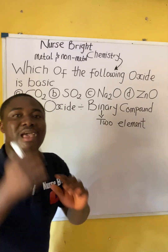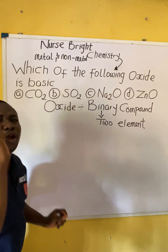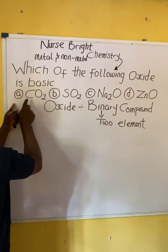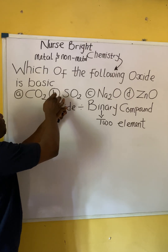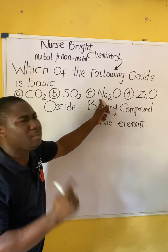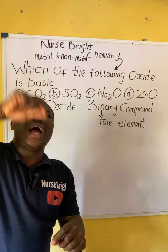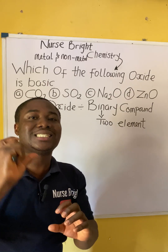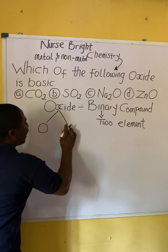Any compound being binary means it is made up of two elements. Observe all the options — forget about the numbers attached to them, just the elements. For option A, carbon is one element and oxygen is another — two elements. Option B, sulfur is one element and oxygen is another — two elements. Same for sodium and zinc. You can see there is one element common to all of the options. This tells us that oxides are compounds made up of oxygen and another element.